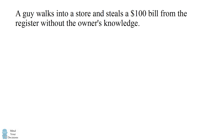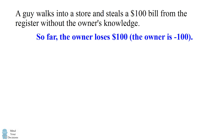In some math problems, and in this story, it helps to break the problem down into different parts. So at first, we'll only consider the first part of the story: a guy walks into a store and steals a $100 bill from the register without the owner's knowledge. At this point, how much does the owner lose? Everyone agrees the owner loses $100. The owner is minus $100 from the initial part of the story.